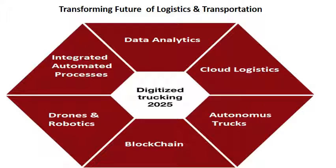The transformation of the future of logistics and transportation, based on a 2025 digitized tracking outlook, requires using drones and robotics, integrated automated processes for supply chain systems, data and analytics, cloud storage, autonomous trucks, and blockchain technology.